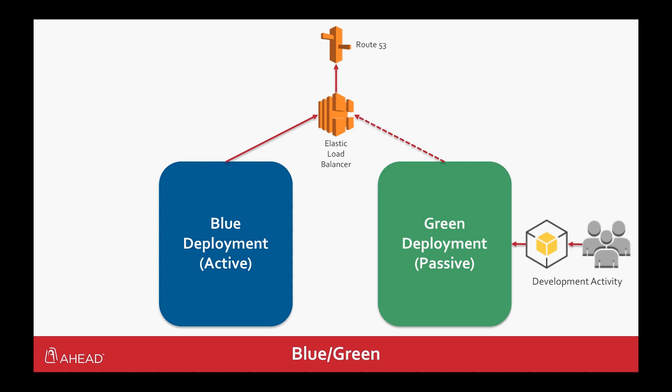Very simply, a blue-green deployment is the idea of having an active deployment environment for your application — blue in this case — and an exact copy of that environment in a passive state — green in this case. Beginning green is a clone of blue; however, development can go ahead and apply their changes to green. They can test all the changes because it's an exact copy of blue, iterate on it, and get all their testing done. Once the testing is vetted out and we're ready to go, we simply do a swap and green becomes active and blue becomes passive. It's a very easy and safe way to get changes into production by flip-flopping environments.